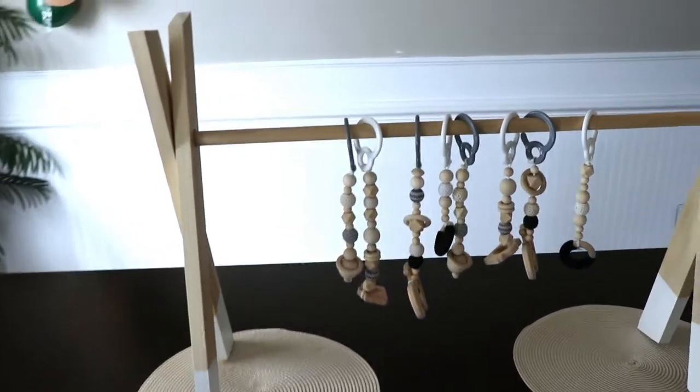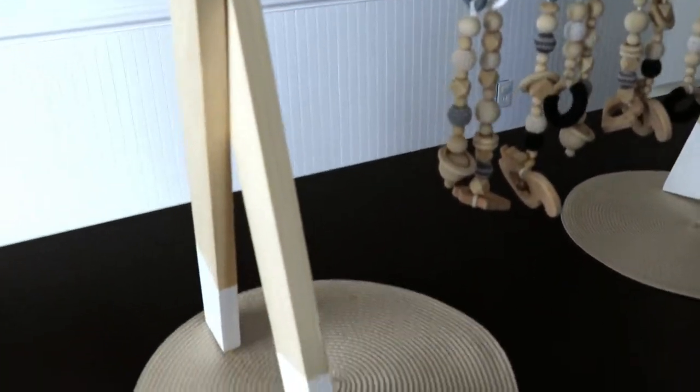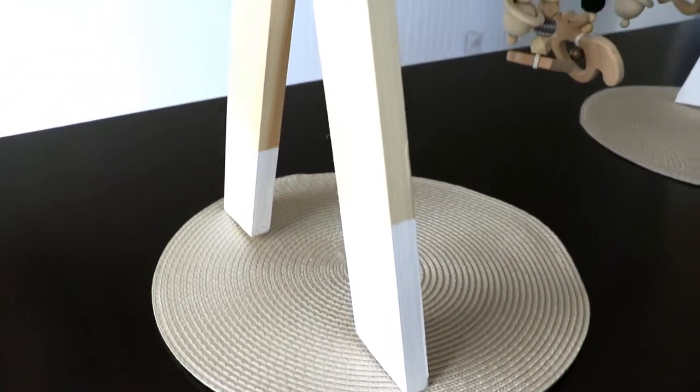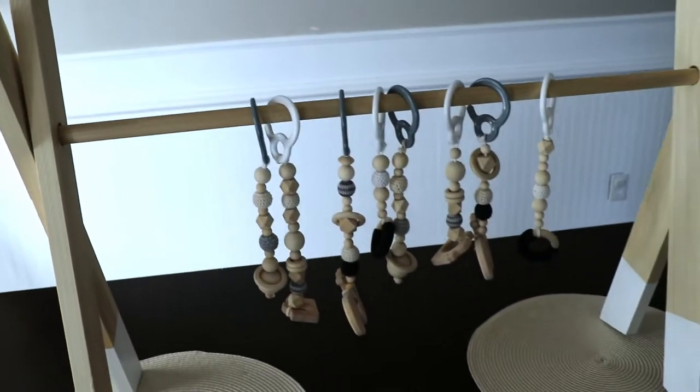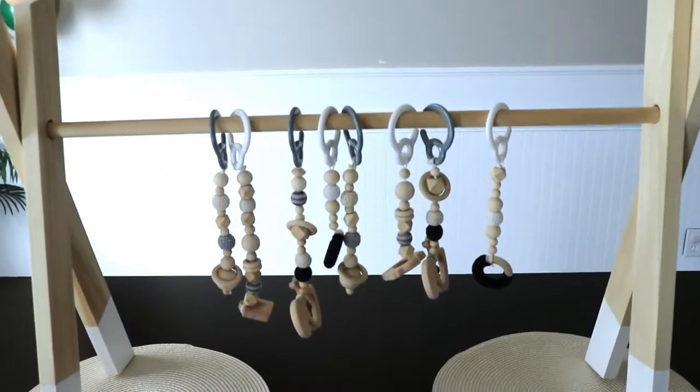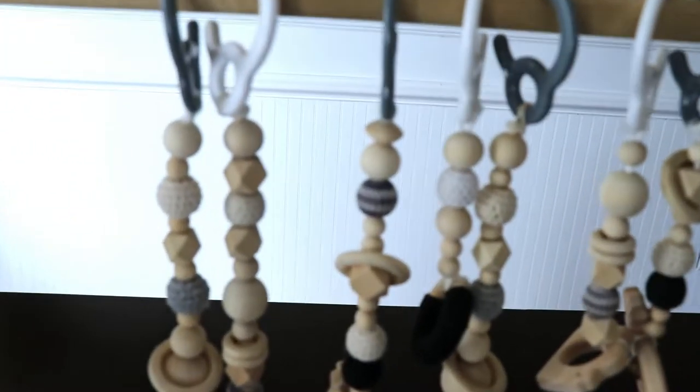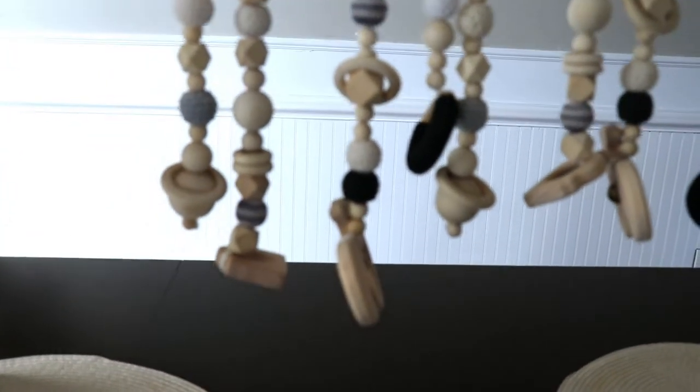One of the first toys he interacted with was this wooden play gym. And my husband actually made this. He just used some lumber, cut it into four parts, attached to a dowel. I painted the bottom white just to make it a little more decorative. And we actually hung all of these wooden toys that I found on Amazon. And he loved them.